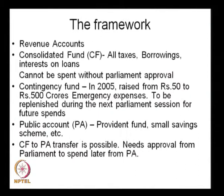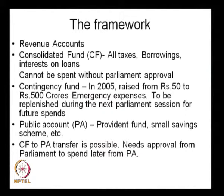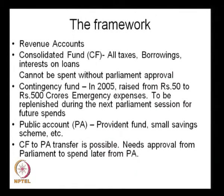The framework of the budget includes revenue and expenditure accounts. There is something called the consolidated fund, into which all the taxes, the borrowings of the government, and the interest it receives on loans disbursed all flow. Any amount of money that gets into the consolidated fund cannot be spent without getting the approval of parliament.